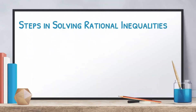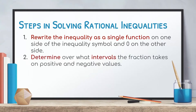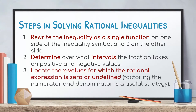These are the steps in solving rational inequalities. First, we write the inequality as a single function on one side of the inequality symbol and 0 on the other side. Second, determine over what intervals the fraction takes on positive and negative values. Third, locate the x-values for which the rational expression is 0 or undefined. Factoring the numerator and denominator is a useful strategy.